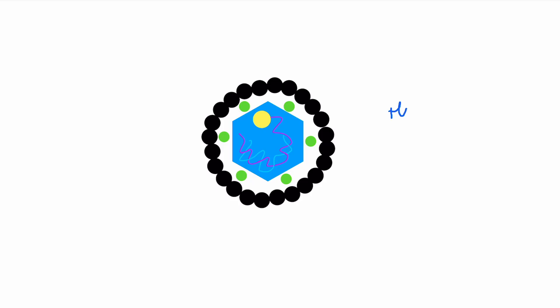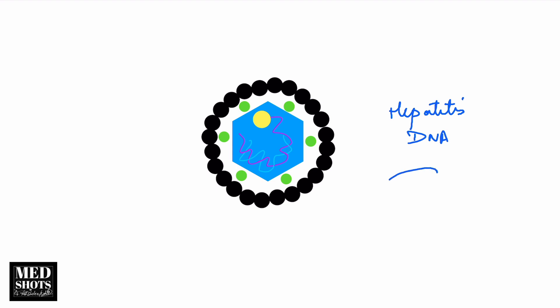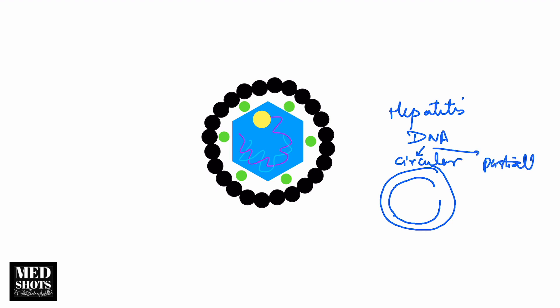Hepatitis B is the only hepatitis virus which is DNA, and even this DNA is special — it is partially double-stranded, meaning some portion is single-stranded. It is also circular. So a circular and partially double-stranded DNA is seen, and it is the only hepatitis virus with a DNA genome.